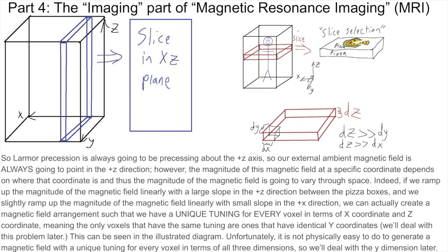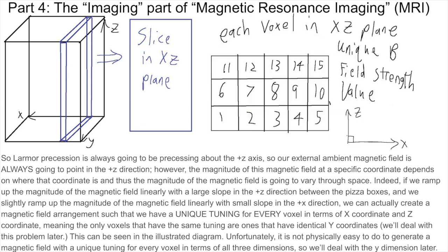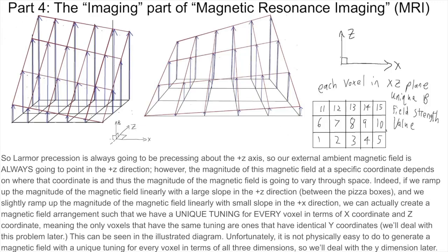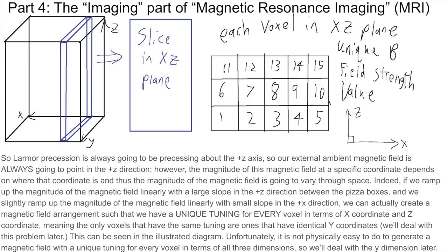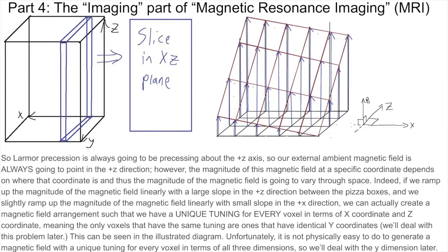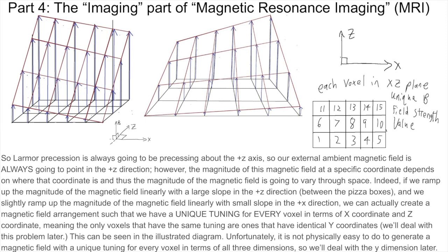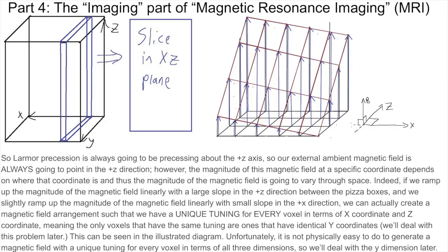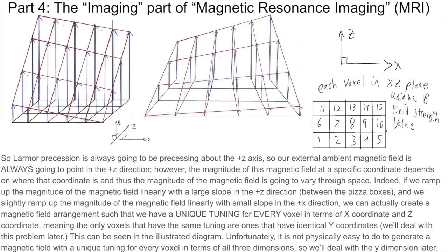However, the magnitude of this magnetic field at a specific coordinate depends on where that coordinate is in three-dimensional space, and thus the magnitude of the magnetic field is going to vary through three-dimensional space. If we ramp up the magnitude of the magnetic field linearly with a large slope in the plus Z direction between the pizza boxes, and slightly ramp up the magnitude linearly with a small slope in the plus X direction, we can create a magnetic field arrangement such that we have a unique tuning for every voxel in terms of X coordinate and Z coordinate — meaning the only voxels that have the same tuning are ones that have identical Y coordinates. We'll deal with this problem later.